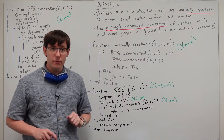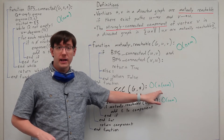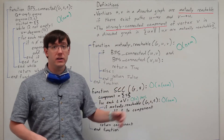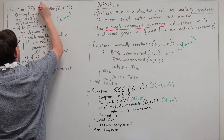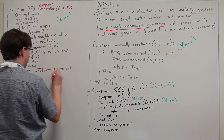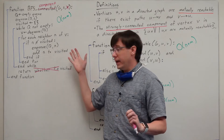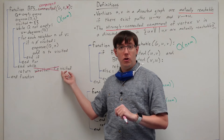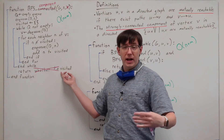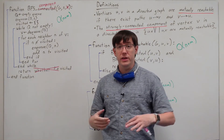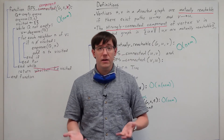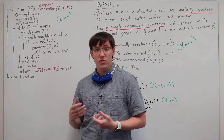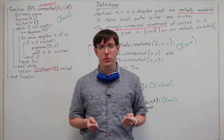This directed graph version is taking n times as long as the undirected graph version, which can be done in a single breadth-first search. In an undirected graph, we can simply return the set of all vertices visited by breadth-first search to get the connected component. So ideally, we'd like to have some way of finding strongly connected components where the running time is on the same order as finding connected components.